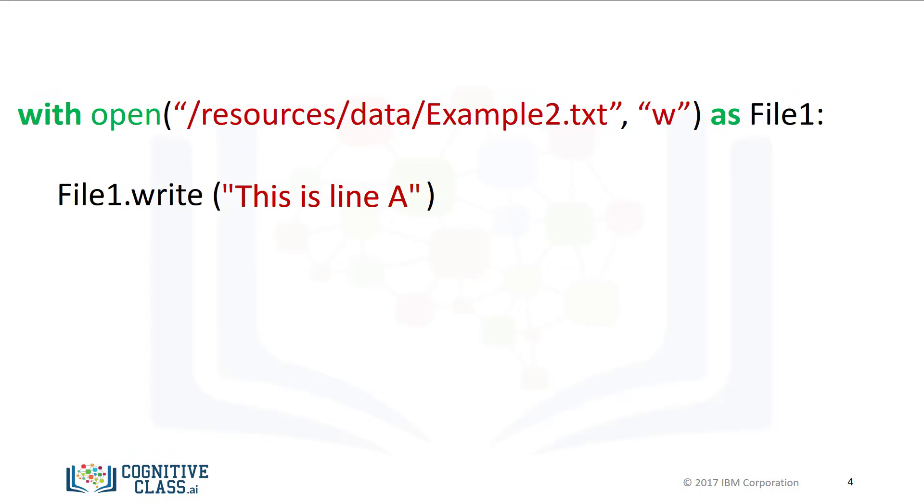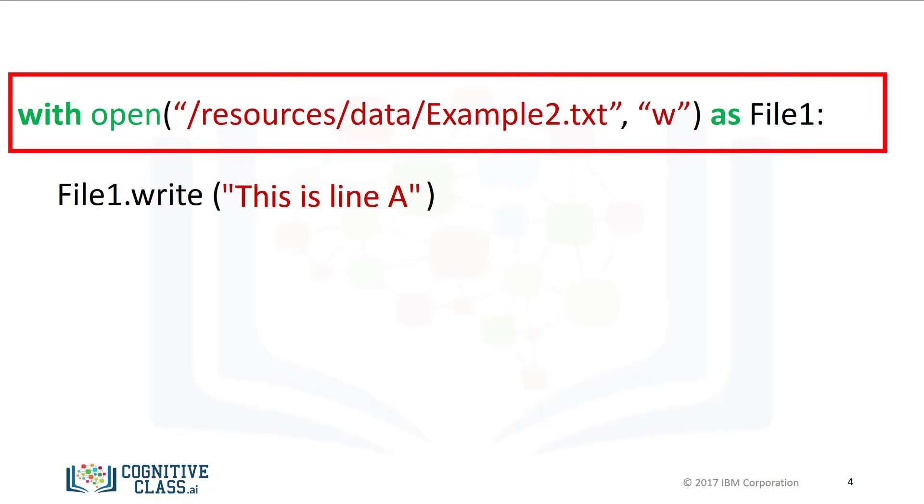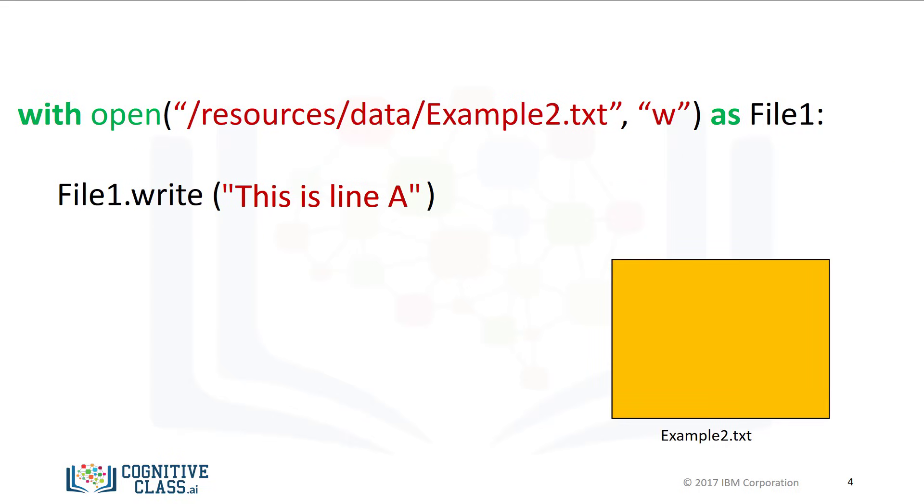As before, we use the with statement. The code will run everything in the indent block, then close the file. We create the file object, file1. We use the open function. This creates a file example2.txt in your directory.